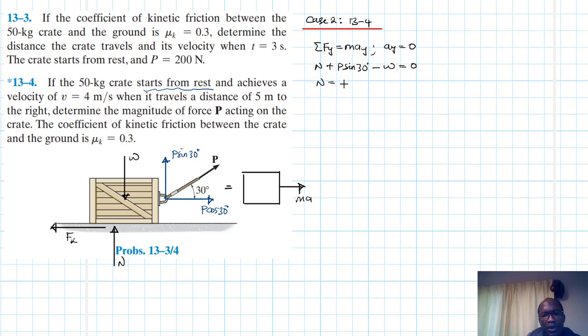Therefore, our N will just be equal to W minus P sin 30. Right? And then we know that our W is just MG, which is just equal to 50 by 9.81.